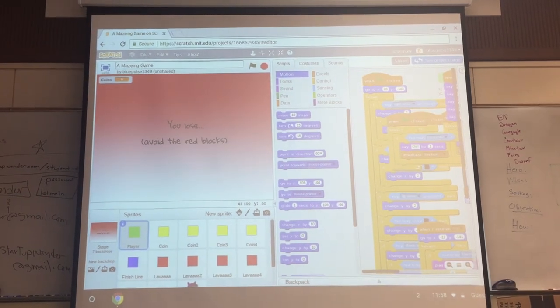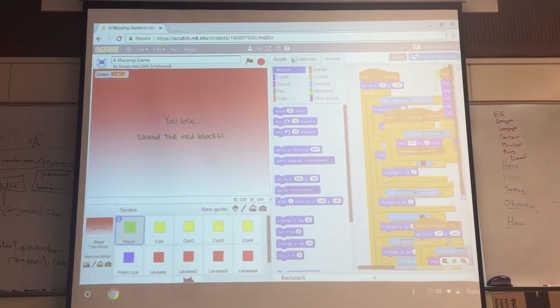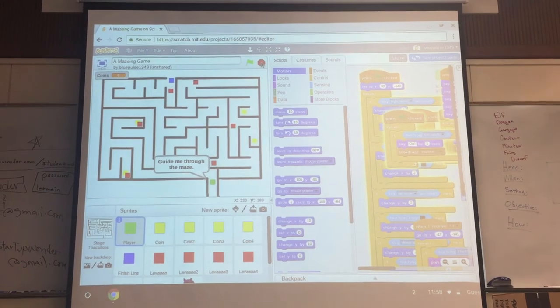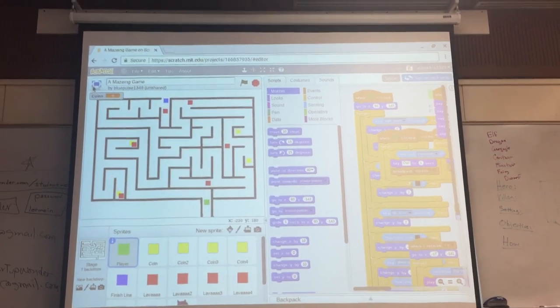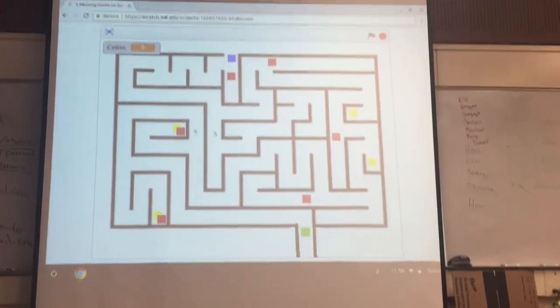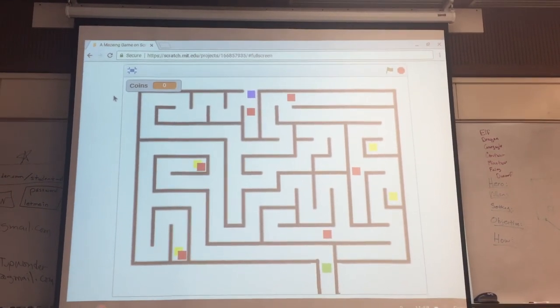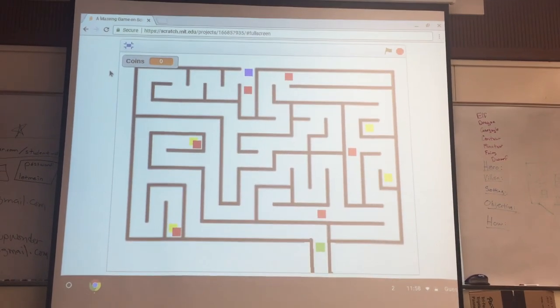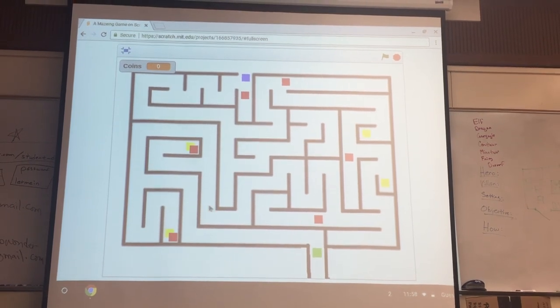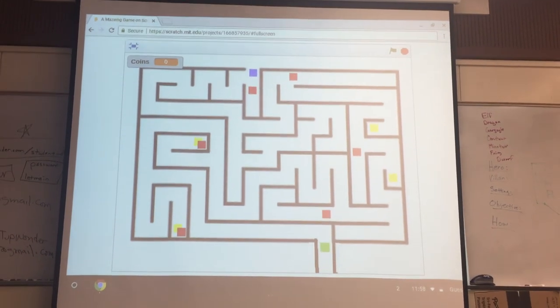It goes like that. Avoid the red blocks. And then at the end, when the cat touches the player, it's supposed to do a crazy screech thing. But it doesn't because there's no audio.